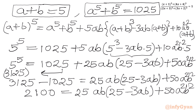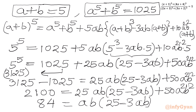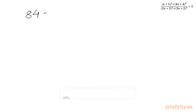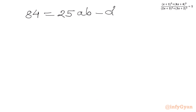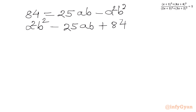Now the equation is divisible by 25, so let us divide both sides by 25. We get 84 equal to ab times (25 minus 3ab) plus 2 a^2 b^2. Simplifying the right-hand side: 84 equal to 25ab minus 3a^2 b^2 plus 2a^2 b^2. Taking all terms to the left: a^2 b^2 minus 25ab plus 84 equal to 0.